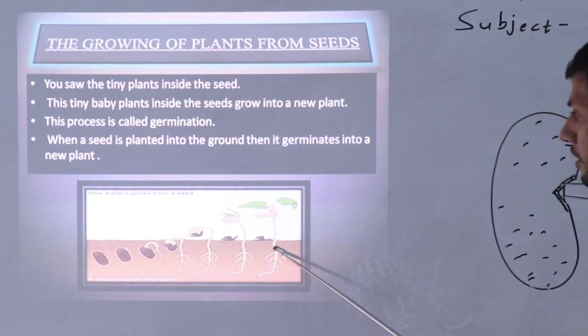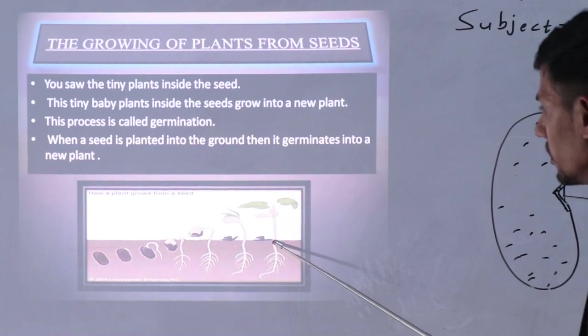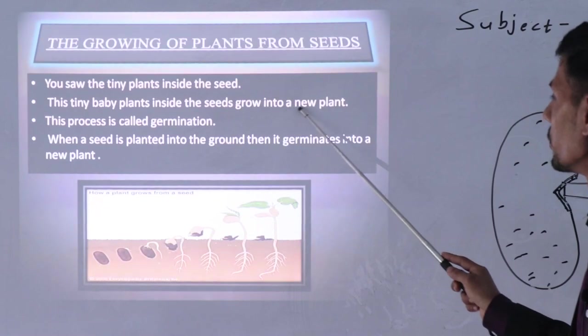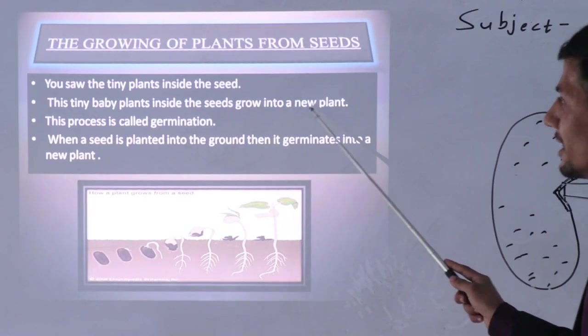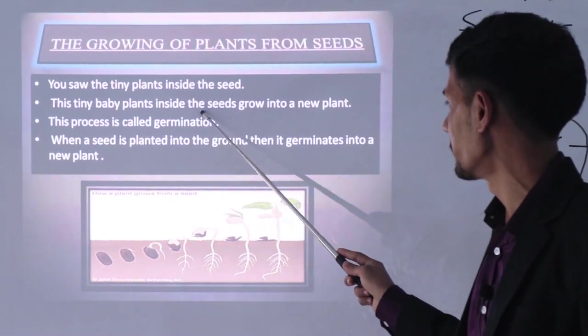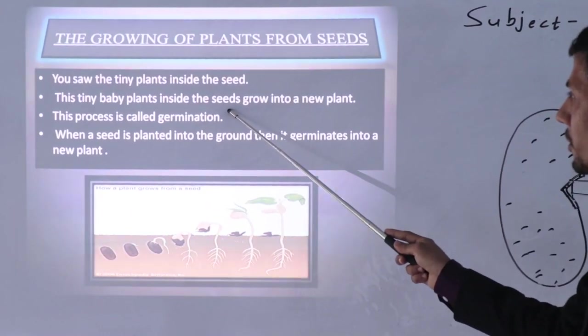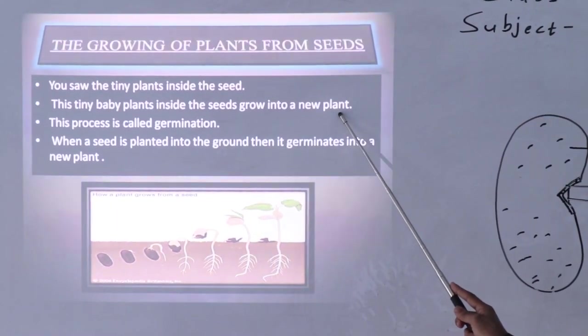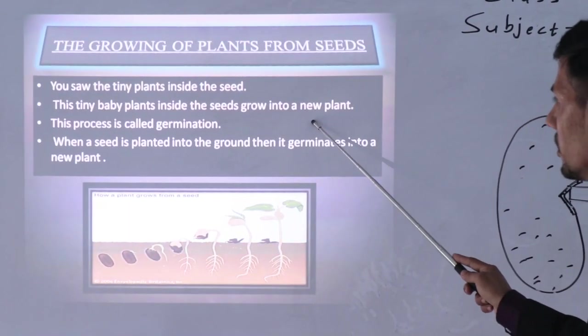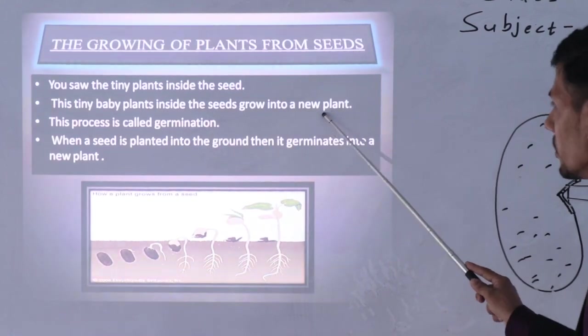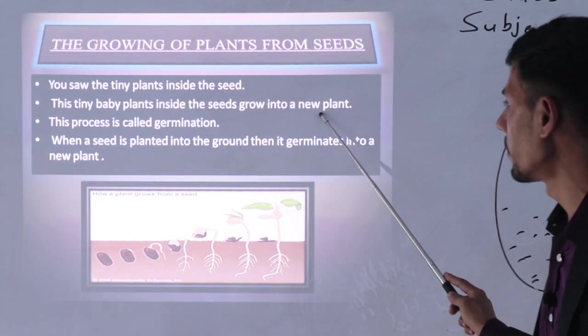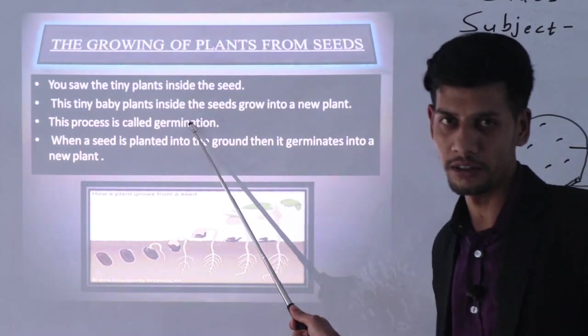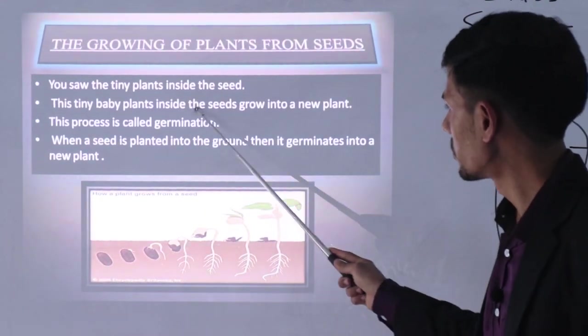This tiny baby plant inside the seed grows into a new plant. The same small baby plant which is inside the seed will grow bigger in the future. What will it become? A new plant. After some months, or after some years, it becomes a new plant - a big plant.